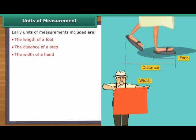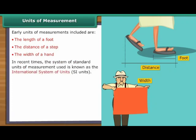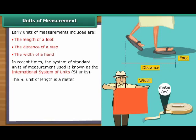To standardise the units, a metric system was put in place. This system is a standard unit of measurement and the system of standard units of measurement used now is known as the International System of Units or SI Units. The SI unit of length is a metre.